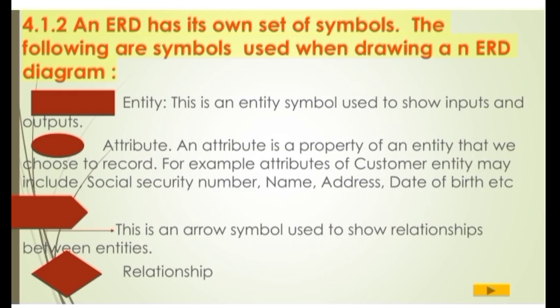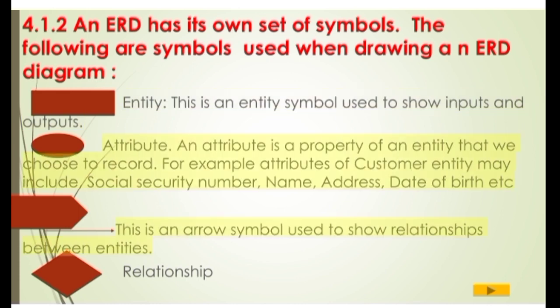An ER diagram has its own set of symbols. The following are symbols used when drawing an ER diagram. Entity: this is an entity symbol used to show inputs and outputs. Attribute: an attribute is a property of an entity that we choose to record. For example, attributes of a customer entity may include social security number, name, address, date of birth, etc. An arrow symbol is used to show relationships between entities.